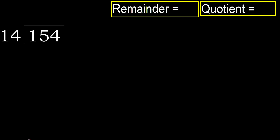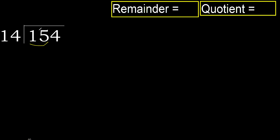154 divided by 14. 1 is less, therefore next. 15 is not less, therefore with 15. 14 multiplied by which number is nearest to 15?